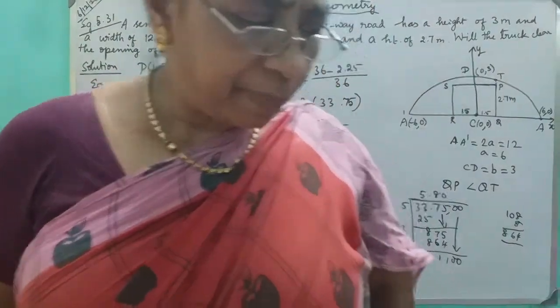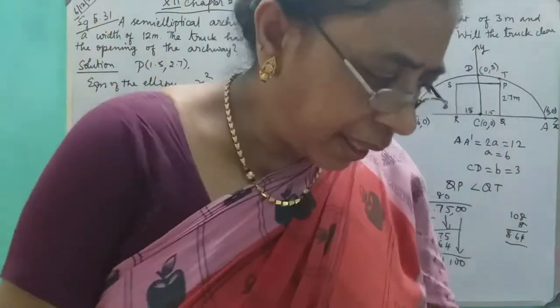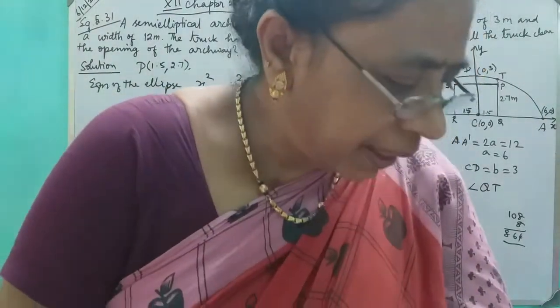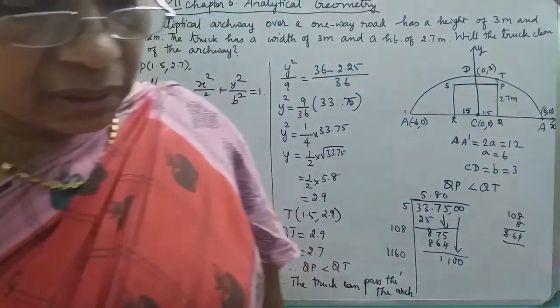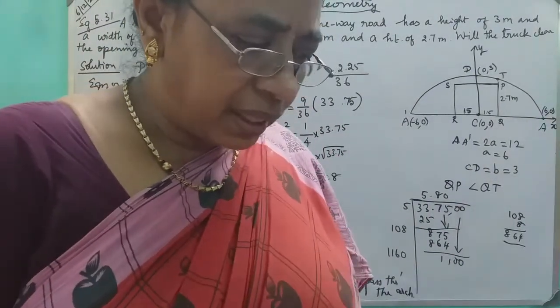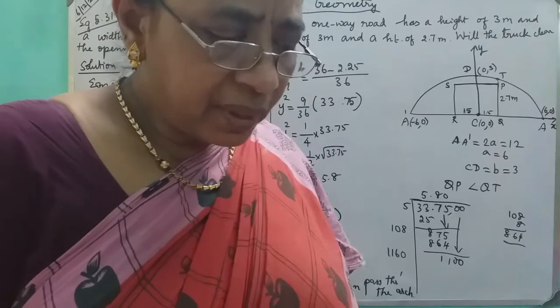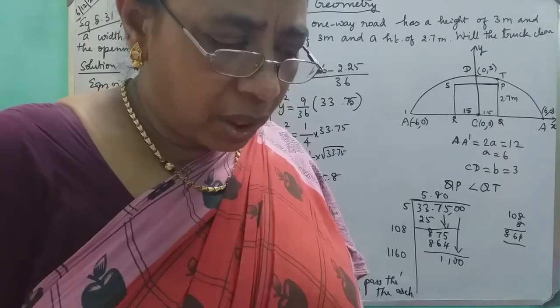Hello students, example 5.31. A semi elliptical archway over a one way road has a height of 3 meters and a width of 12 meters. The truck has a width of 3 meters and a height of 2.7 meters. Will the truck clear the opening of the archway? This is the problem.